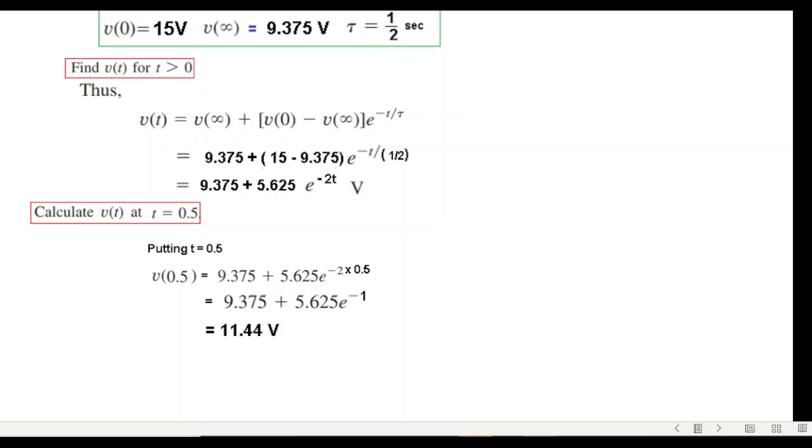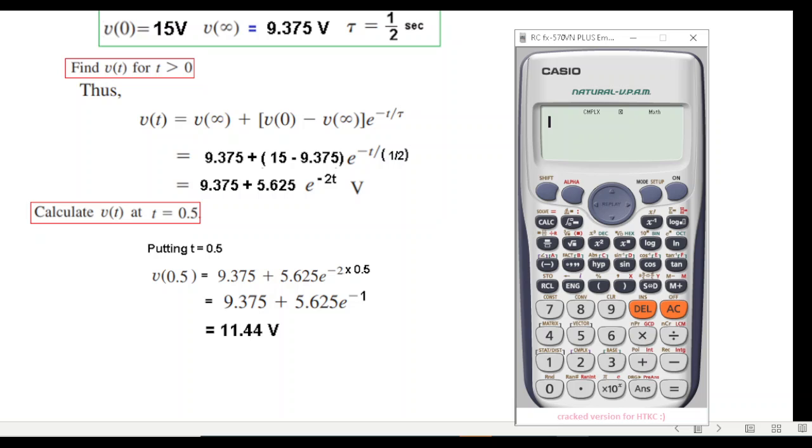Solving: if you want we can take help of the calculator. It has to be in normal mode. So 9.375 plus 5.625 multiplied by e raised to the power minus 1. Let's shift and then e, put in the power minus 1, and press equal sign: 11.444. This is the answer.